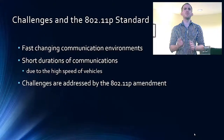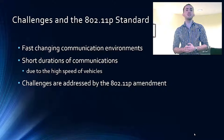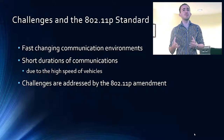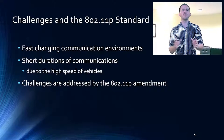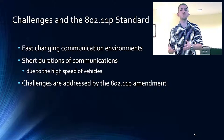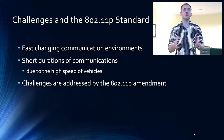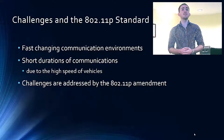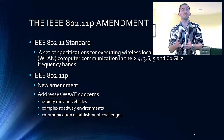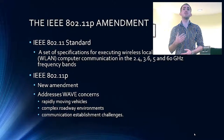The major challenges in WAVE were due to the fast-changing communication environment and short durations of communication due to the high mobility and speed of vehicles. As a result, it was difficult to broadcast a large amount of data for vehicle-to-roadside and vehicle-to-vehicle communication. These difficulties are resolved thanks to the implementation of IEEE 802.11P, an extension to the existing IEEE 802.11 standard that defines the improvements required to support Intelligent Transportation Systems.